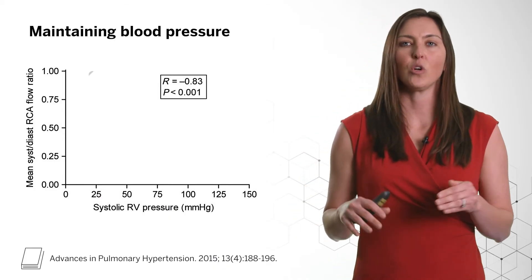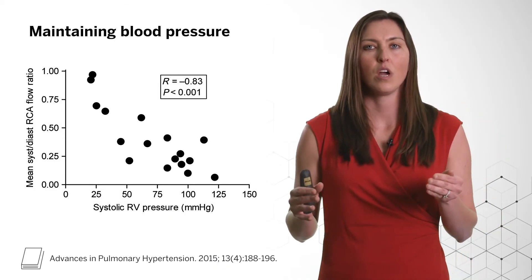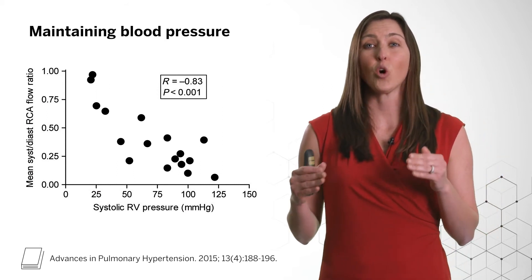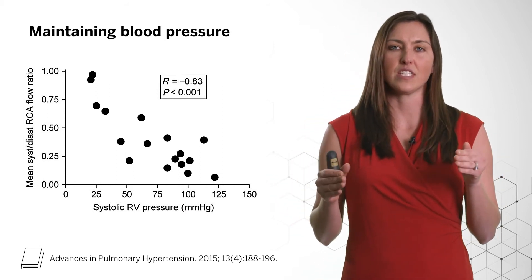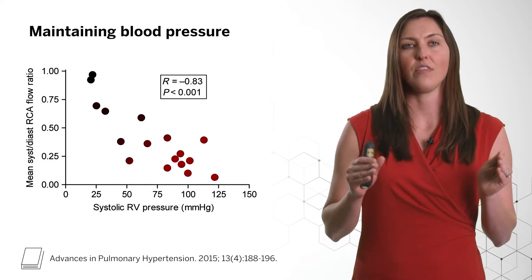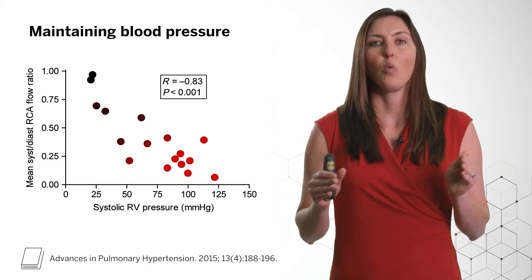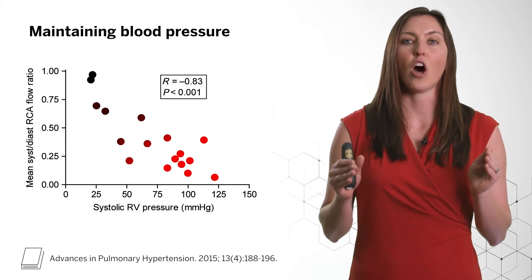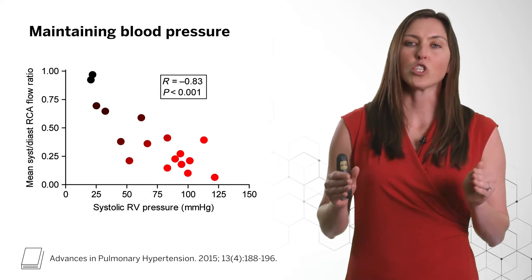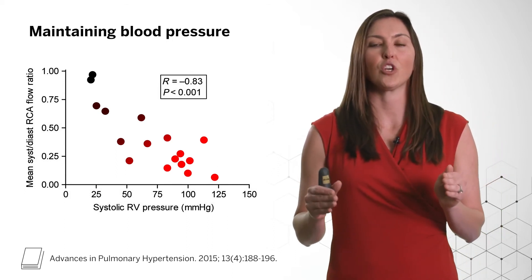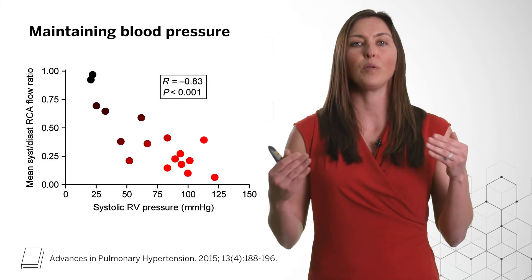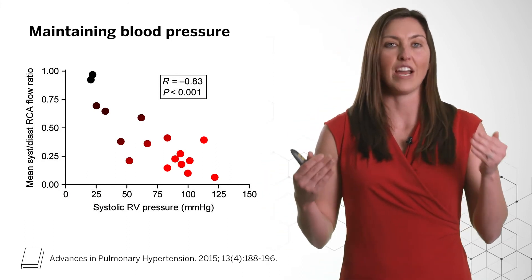As seen in D, there may be evidence of backflow of blood from the right ventricle into the right atrium. When right ventricular systolic pressure is low, the right ventricle receives blood flow via the right coronary artery in both systole and diastole. However, as shown at the bottom of this figure, when right ventricular systolic pressure increases, the right ventricle starts to receive blood only during diastole, which can lead to ischemia or low blood flow to the right ventricle.